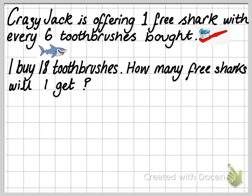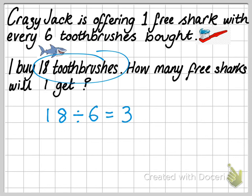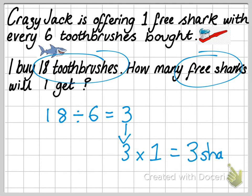The expert's way of figuring this out is to use knowledge of times tables. If this question involved 180 toothbrushes, doing it by drawing dots would take forever. So it's better to use this method: 18 toothbrushes come in sets of six, so divide 18 by six, which gives three. Then multiply that answer by the number of free sharks per set — three multiplied by one gives three sharks.